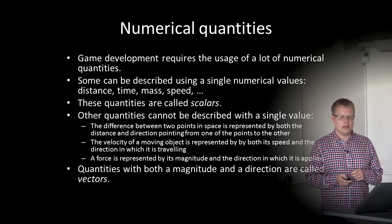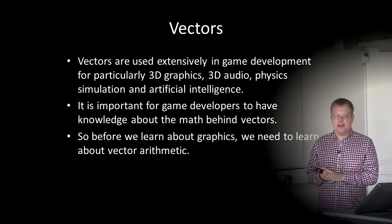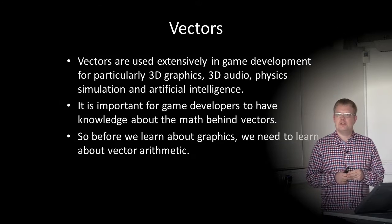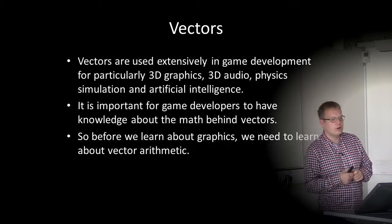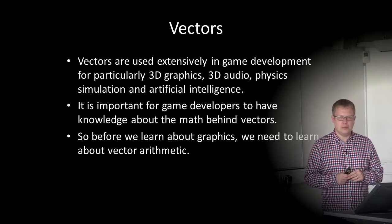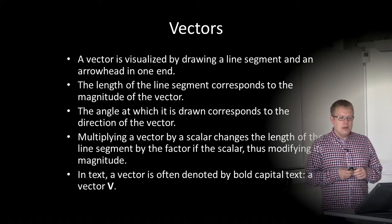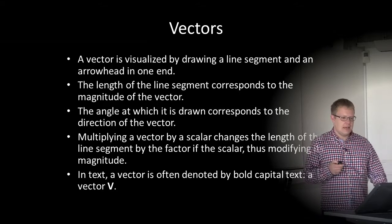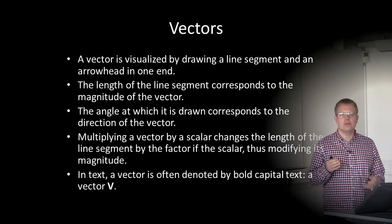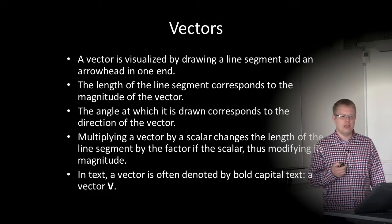The difference between two points in space is represented by both the distance and the direction pointing from one point to the other. The velocity of a moving object is represented by its speed and the direction in which it's traveling. Force is represented by its magnitude and the direction in which it is applied. Quantities with both magnitude and direction are what we call vectors. A vector can have multiple values, and they are used extensively in game development — particularly in graphics, audio, physics simulation, and artificial intelligence.